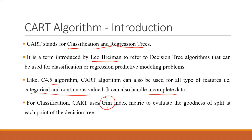There is a story related to the Gini index. The Gini index actually came from the world of economics. There was a person called Max Lorenz, who in 1905 — around 116 years ago — gave a graph to show the inequality between the income of the population of a country.